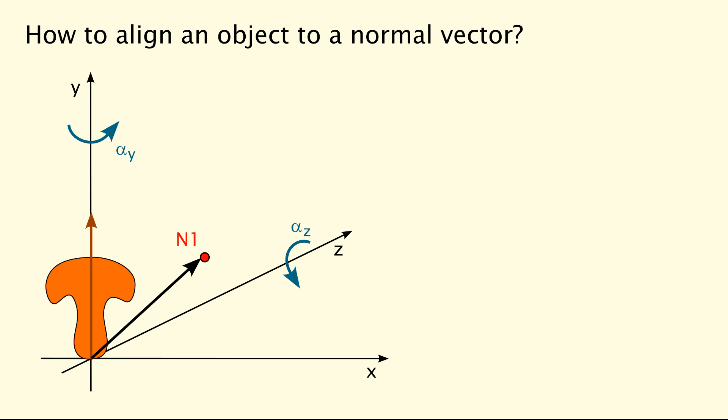The angles for these rotations can be calculated from the normal vector's coordinates as follows. The angle for the rotation around the z-axis is calculated from the arc sinus of the normal vector's x coordinate. The angle for the rotation around the y-axis is calculated from the arc tangent of the ratio of the normal vector's x and z coordinate.